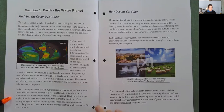Weather is the conditions of the atmosphere — temperature, humidity, wind speed, and precipitation — at a particular place and time. Climate is the average weather in a location over 30 years or more.